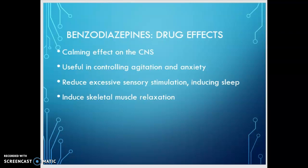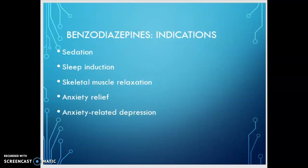Because of these effects, benzodiazepines are also risky when used with opioids. Many of our opioid overdoses have been found to result from benzodiazepines used in conjunction with opioids. Indications for benzodiazepines include: when we need sedation, to induce sleep, as a skeletal muscle relaxant, for relief from anxiety, or anxiety-related depression. They are not antidepressant drugs, however, so you have to be careful if your patient is taking them for anxiety-related depression — you may need to do an SBAR and recommend a referral to get them on a different medication.